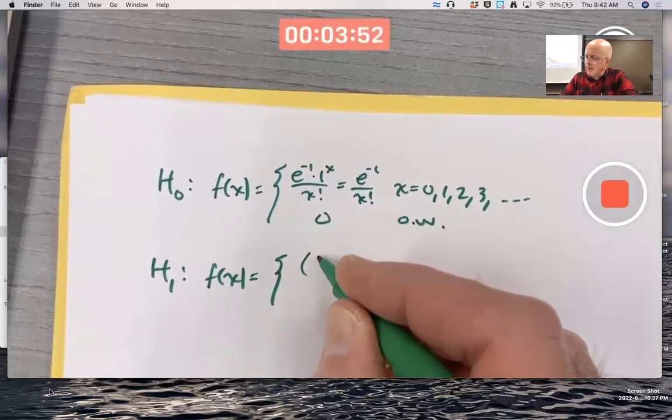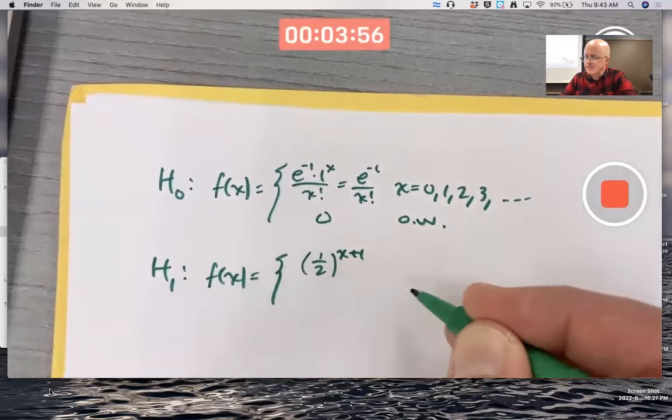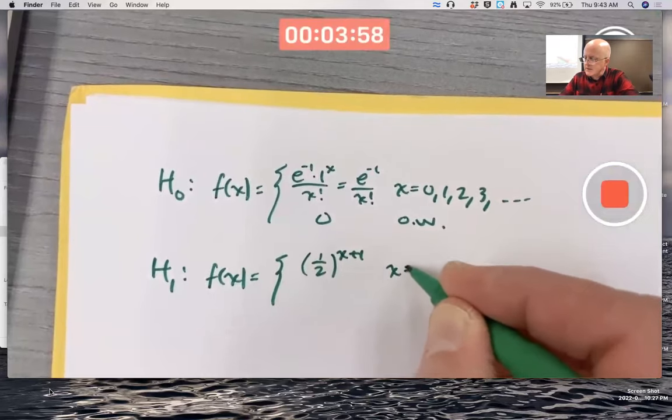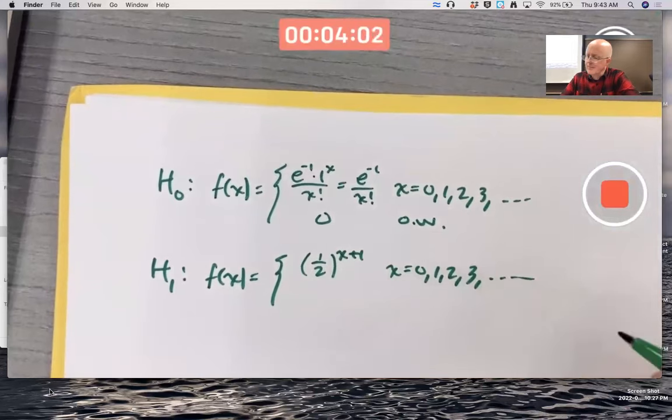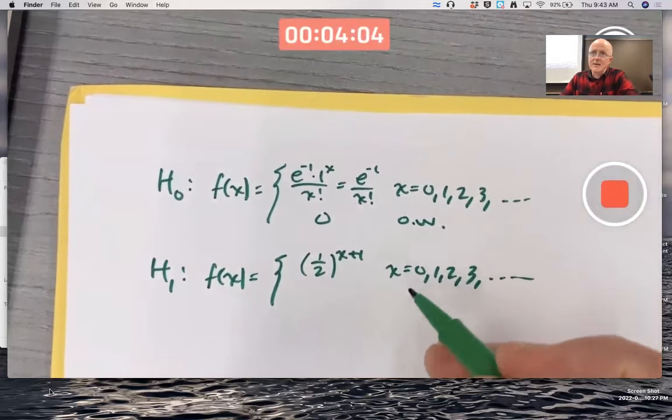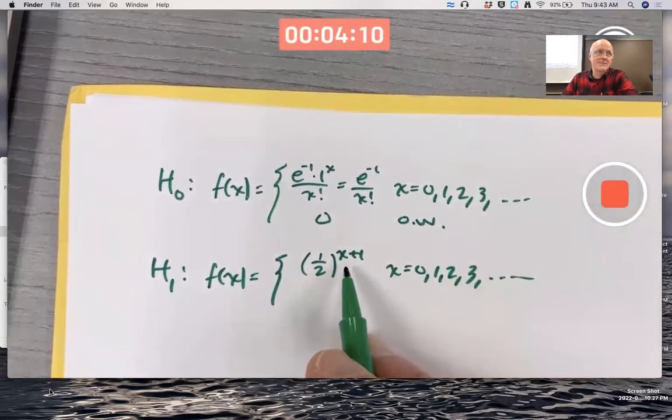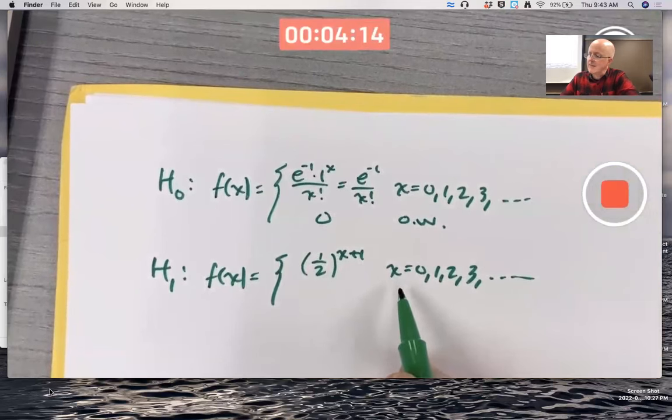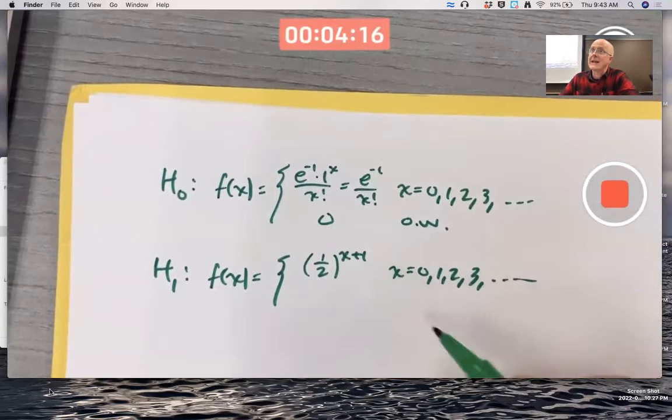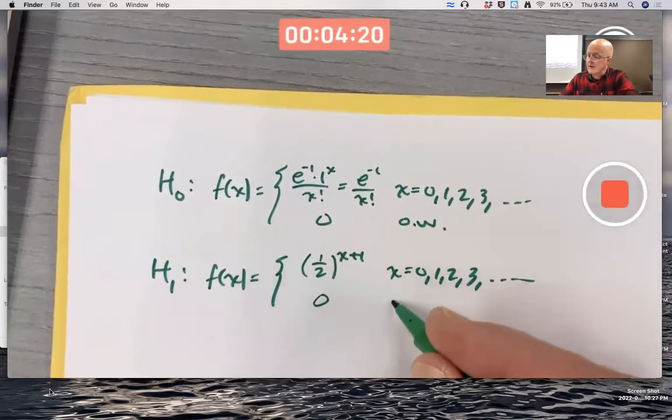And when it's non-zero, it's going to be one half to the X plus one power for X equals 0, 1, 2, 3, etc. I wanted to make it a shifted geometric random variable by effectively making this power X plus one instead of X, since I want the domain where this is non-zero to match the domain where this is non-zero, starting at X equals 0 instead of X equals 1. Zero otherwise.